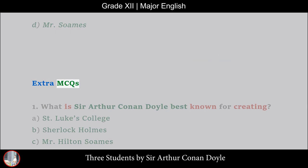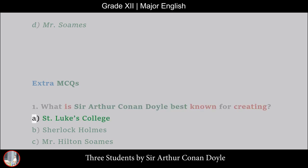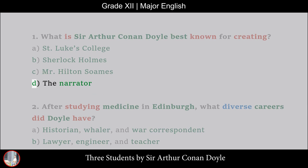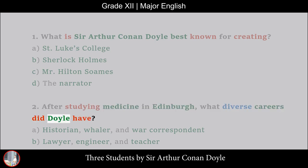Extra MCQs. 1. What is Sir Arthur Conan Doyle best known for creating? A. St. Luke's College, B. Sherlock Holmes, C. Mr. Hilton Soames, D. The Narrator. 2. After studying medicine in Edinburgh, what diverse careers did Doyle have? A. Historian, whaler, and war correspondent, B. Lawyer, engineer, and teacher, C. Scientist, musician, and artist, D. Actor, chef, and farmer.